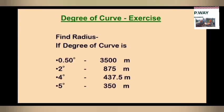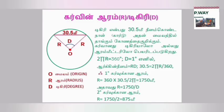For a 1-degree curve the radius is 1750 meters. For a half-degree curve the radius will be 3500 meters. For a 2-degree curve the radius will be 875 meters.